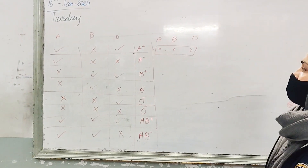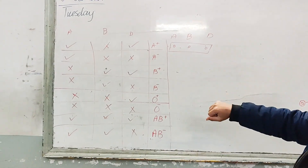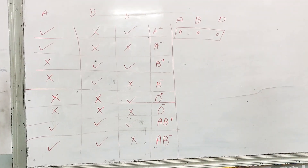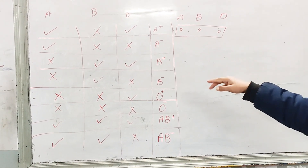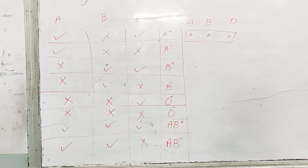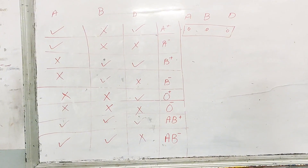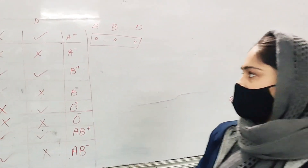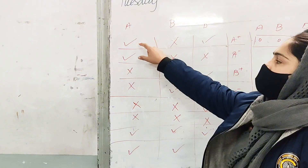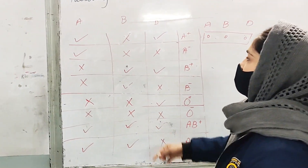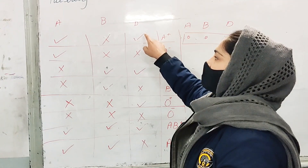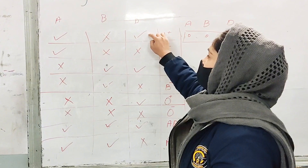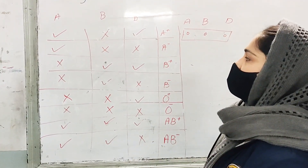Here I have a table. We will use it to know our blood group. For anti-sera D: if we observe clumping of cells, it tells us that our blood group is positive. But if clumping does not occur, it tells us that our blood group is negative. If clumping happens in both A and D, we will have blood group A positive.